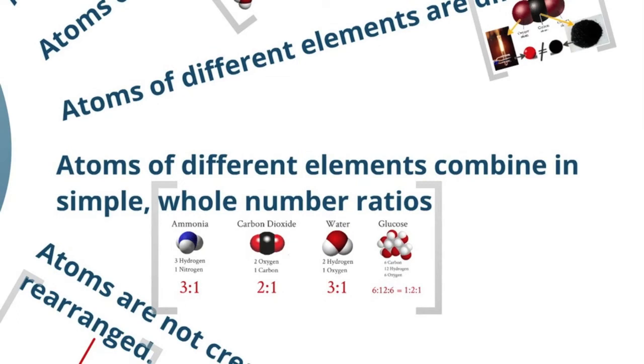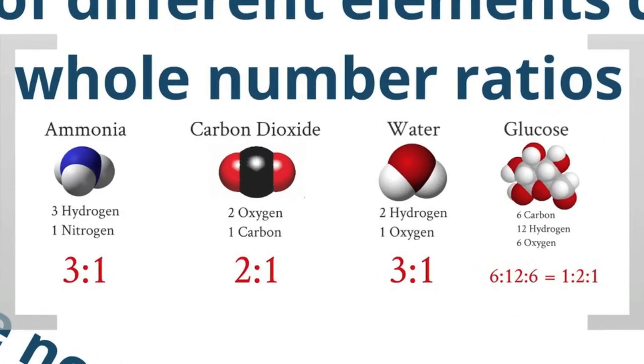The next major pillar of Dalton's atomic theory is that atoms of different elements combine in simple whole number ratios. Here we have ammonia, which has three hydrogen atoms and one nitrogen atom. The ratio of hydrogen to nitrogen is three to one. Carbon dioxide, oxygen to carbon ratio is two to one. In water, the hydrogen to oxygen ratio is two to one.